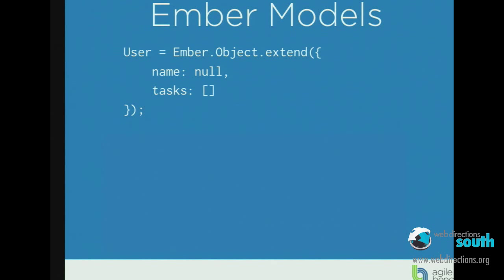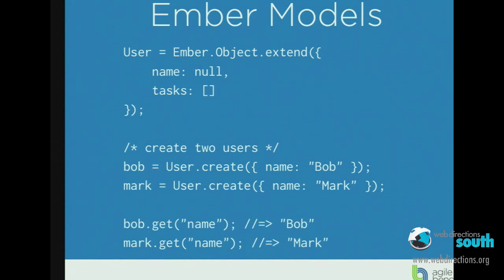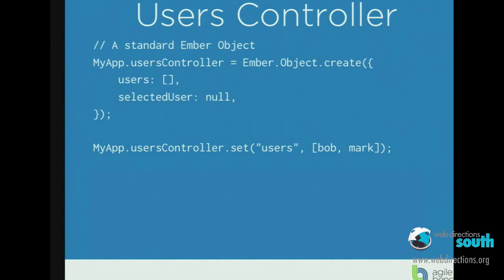So let's create a user object. It's a pretty simple declaration. A user has a name and some tasks, and we can instantiate those objects and get some values out of it. We'll also have a users controller. A users controller really has a bunch of users associated with it, so we're going to use the controller and throw some users in it.